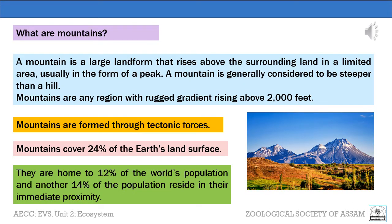Before going to study about the mountain ecosystem, let us first understand what are mountains. A mountain is a large landform that arises above the surrounding land in a limited area, usually in the form of a peak. A mountain is generally considered to be steeper than a hill.